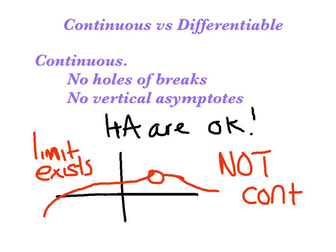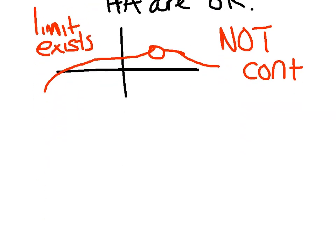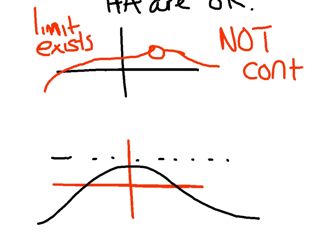Now let me show you a quick example with the asymptotes. I can certainly draw a function that has a horizontal asymptote that is continuous. As I go from the left to the right, I have no holes or breaks, so this is definitely a continuous function. It wouldn't work that way if it was a vertical asymptote because there would be a hole or break.